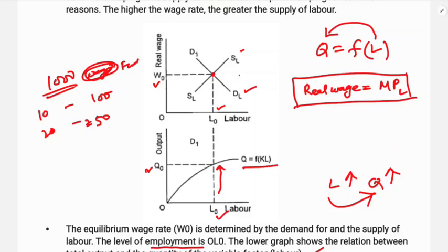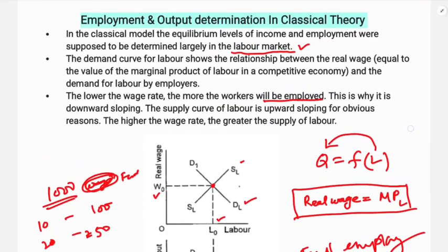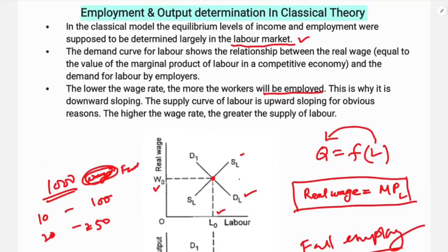The production — that is, the output — remains at the full employment level of output and employment. This was the classical theory. That's all for this class; thanks for watching this video.